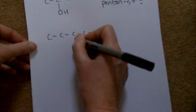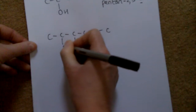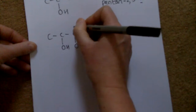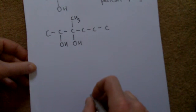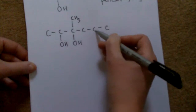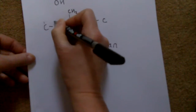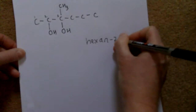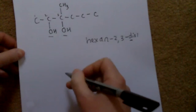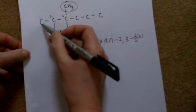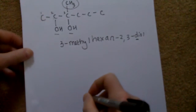For another example: if we have a six-carbon main chain with alcohols on two carbons and a methyl group as a side chain, the main chain is hexane. Giving the lowest numbers — one, two, three — we have hexane-2,3-diol. We also have a methyl group on carbon 3, so it's 3-methylhexane-2,3-diol.